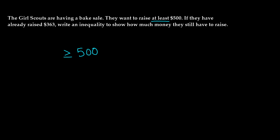So it can be either $500 or more than that. It's also telling us they have already raised $363. What can we add to 363 to get at least $500? We're going to use a variable again — let's say the variable is N. So 363 plus N is greater than or equal to 500.